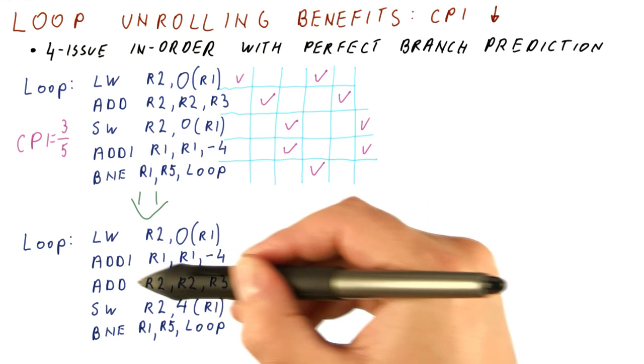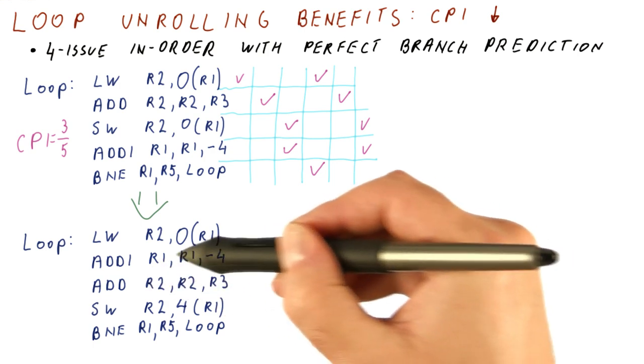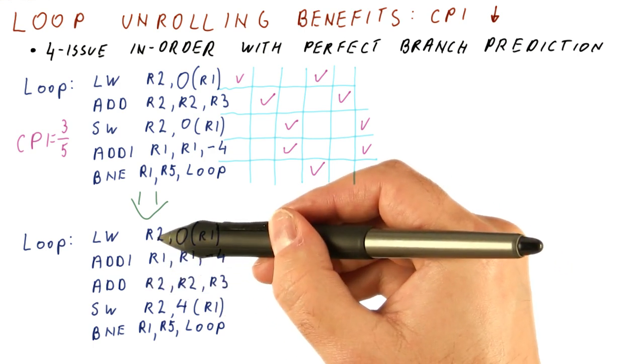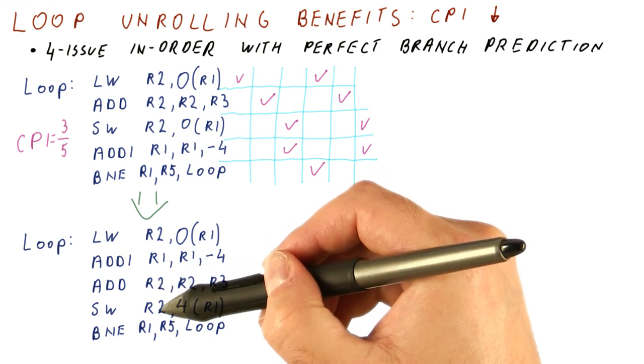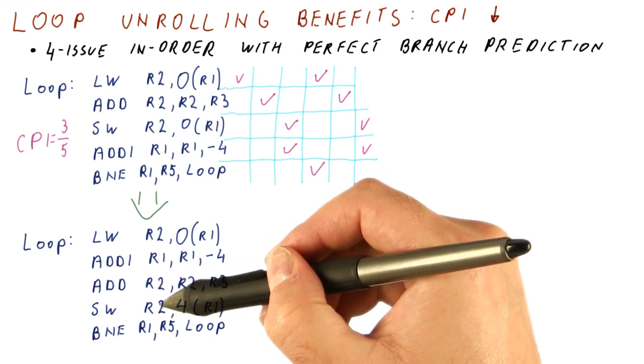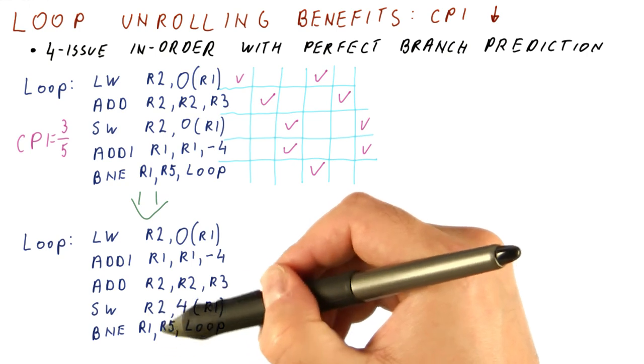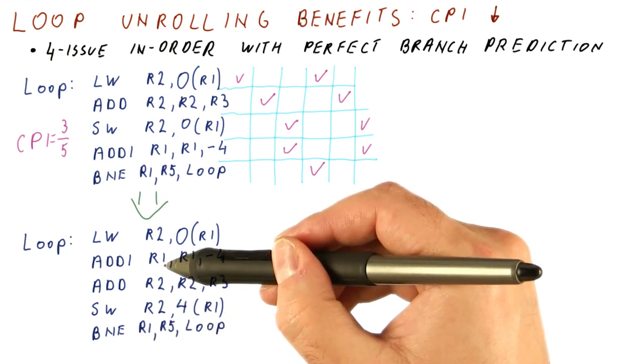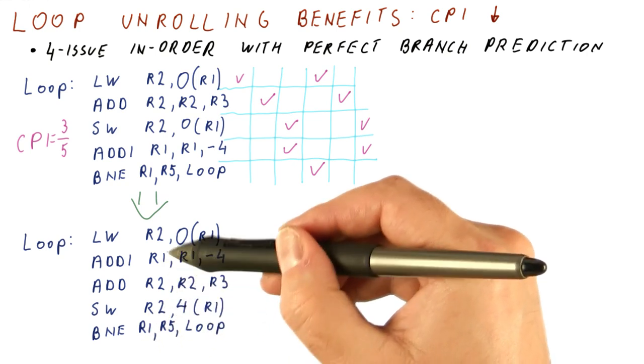Note that moving the add i is really the only scheduling freedom we have here, because we need to do the load, and the add, and the store in that order, so they cannot be reordered. The branch needs to stay at the end of the loop, so pretty much the only freedom we have is where is the add i going to happen.